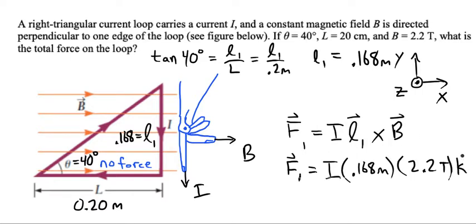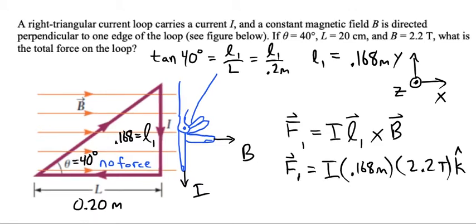Let's put that in. Our direction of course here will be K hat. So F1 is 0.369 I K hat.